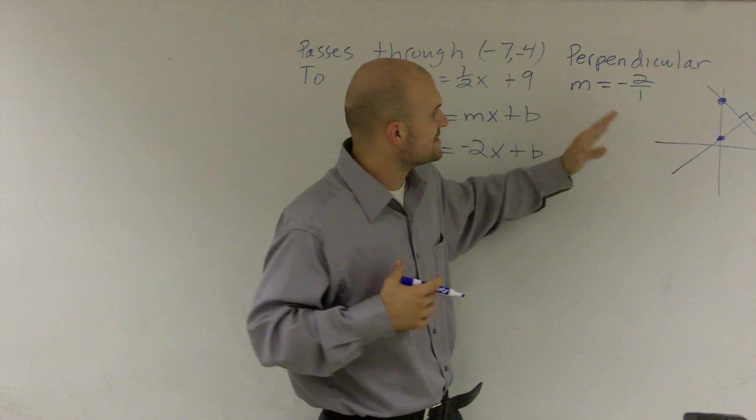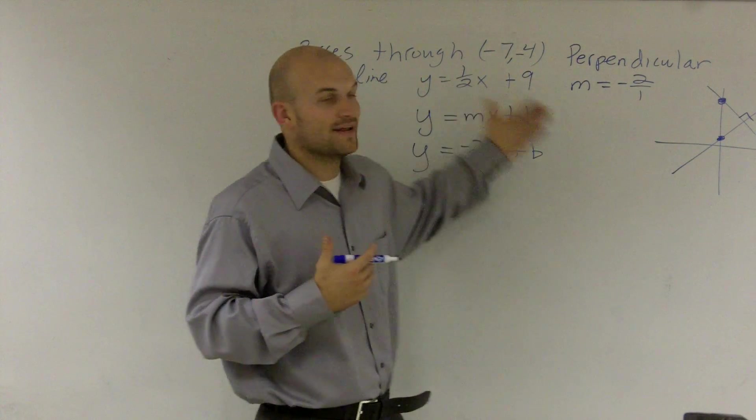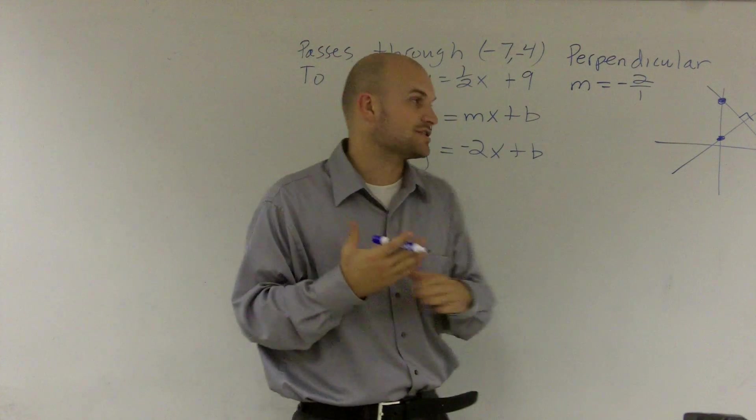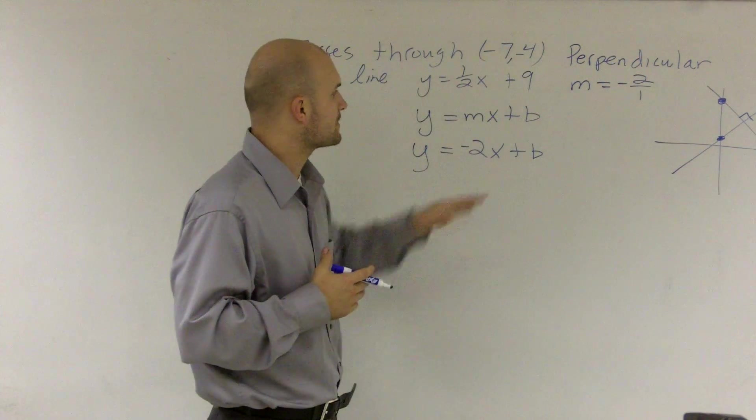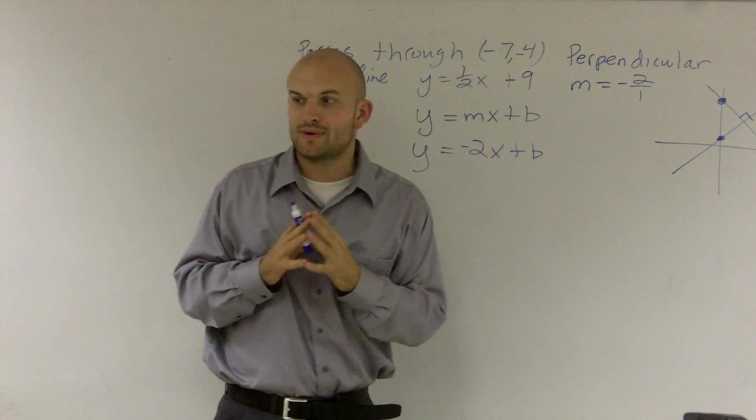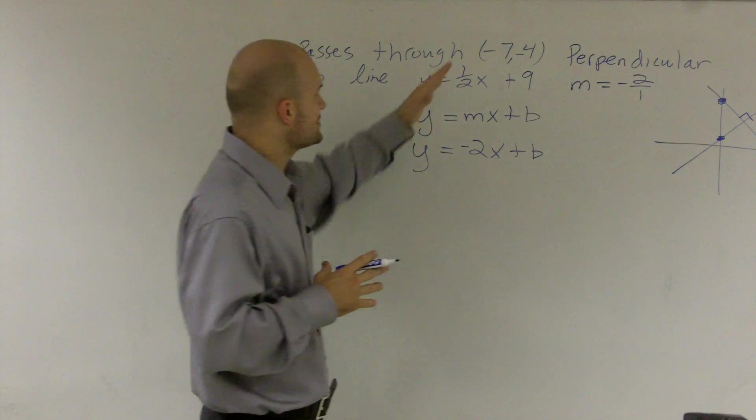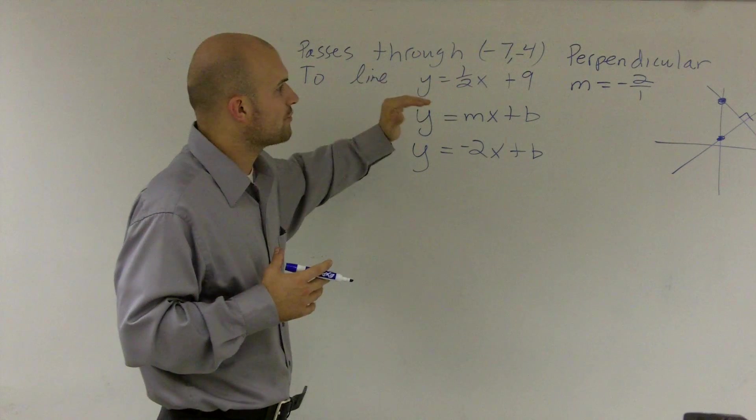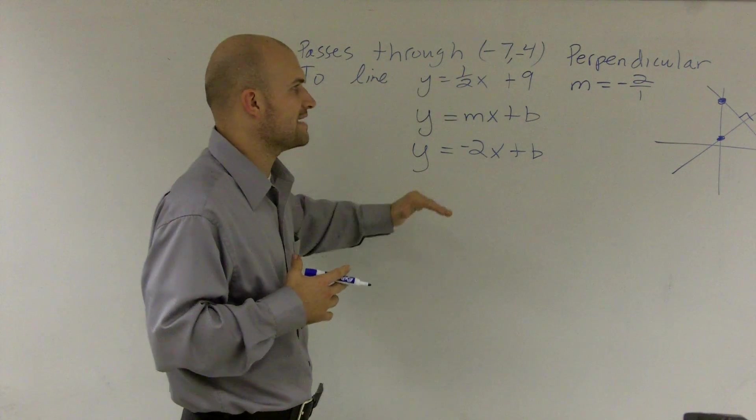b is 9 is the intercept for one of the equations. We want to find the intercept for the equation that is perpendicular to that line. So to find our value of b, what we have to do is we know that these two points or our new graph goes through the point negative 7, negative 4.